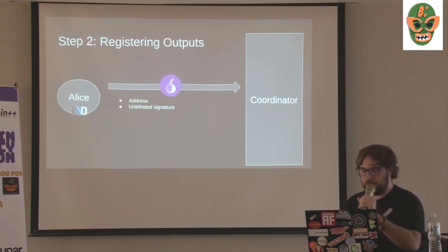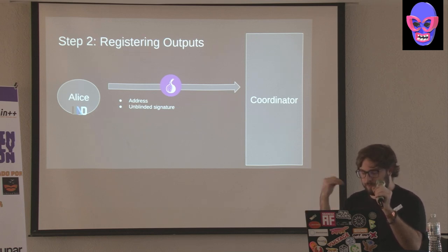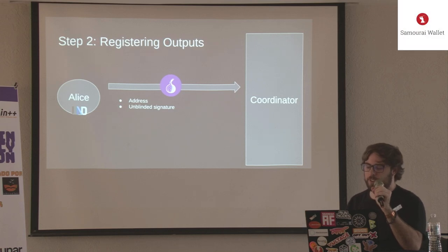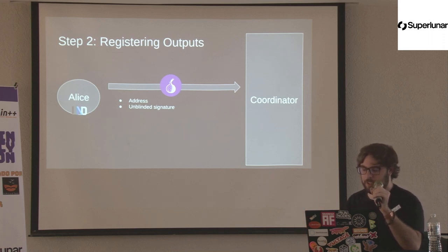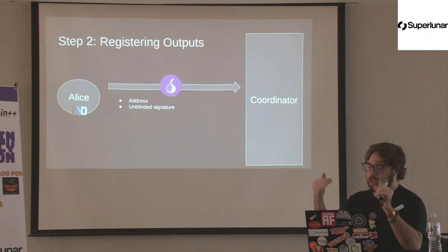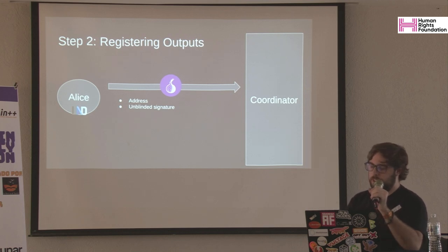Later, once the round is ready, Alice will under a new Tor identity give the unblinded address and unblinded signature to the coordinator. This allows the coordinator to verify that this address was registered by someone, but because they don't know who the signature was for, they can't tell if it was Alice, Bob, or Carol. The coordinator can't link the address to the inputs.